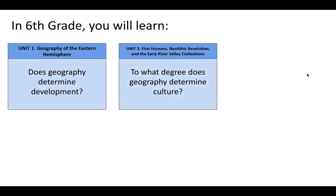Next, in unit two, you will be studying first humans, the Neolithic revolution, and the early river valley civilizations. You will be asking the question: to what degree does geography determine culture? In this unit, you will get to learn about the very first humans and their religions, and how the geography — the makeup of the land — affected the way that their culture developed and how they lived.